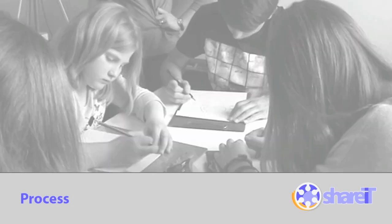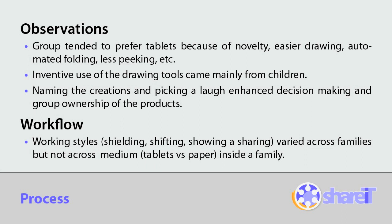How did families work together? Consistently, families preferred the tablet version of the game. Inventive use of the drawing tools, such as simultaneously drawing and changing colors, came mainly from children. The group naming task increased engagement and ownership. Remarkably, the style of work — such as how people shielded their individual drawing — varied more by family than by medium.